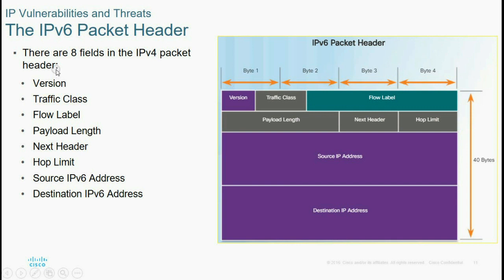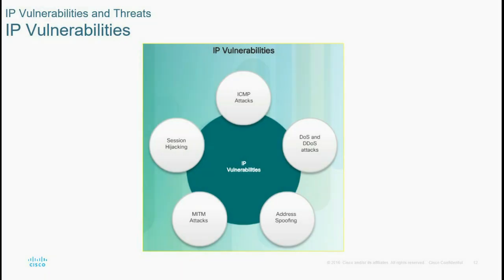There are 8 fields in an IPv6 packet header: version, traffic class, flow label, payload length, next header, hop limit, source IPv6 address, and destination IPv6 address. These are the fields available in the respective IP packet headers.